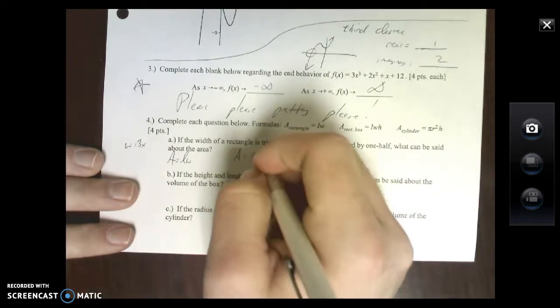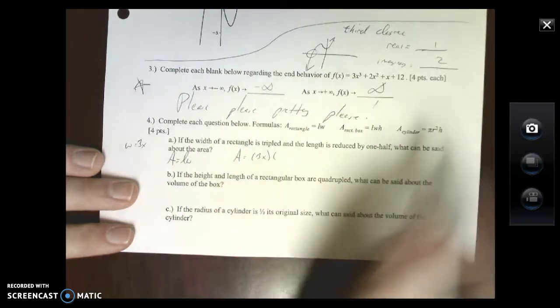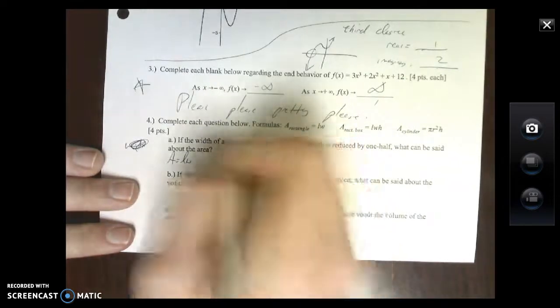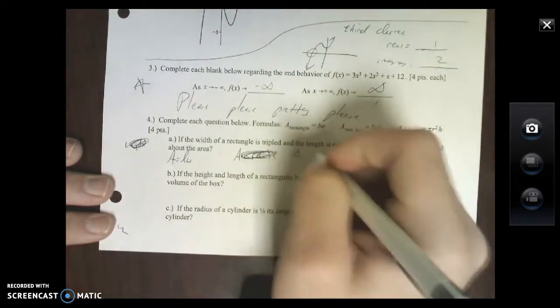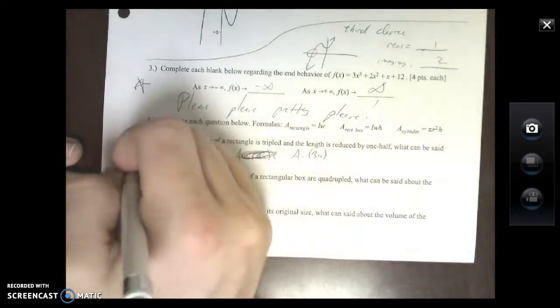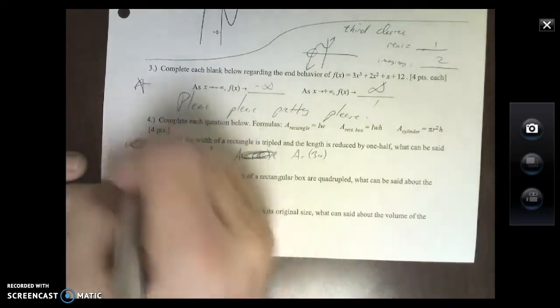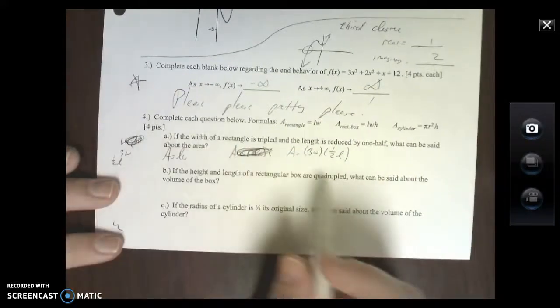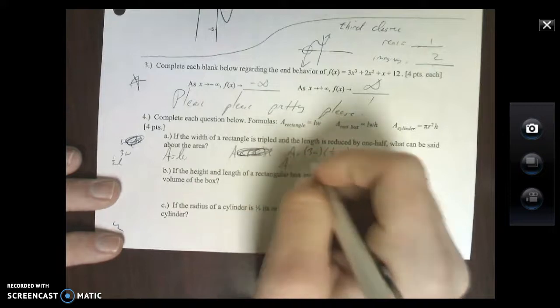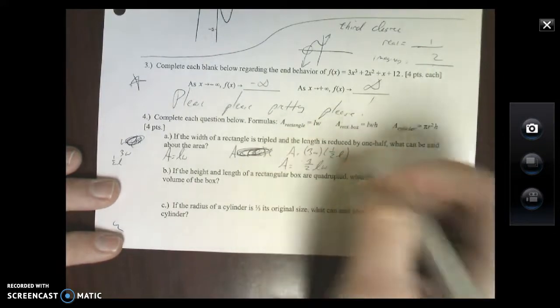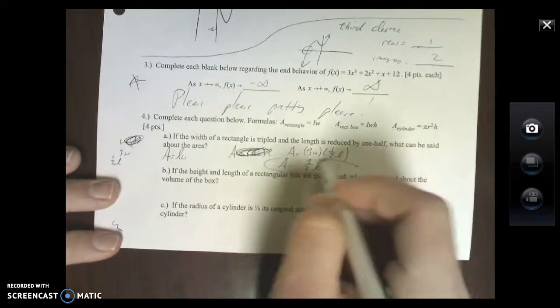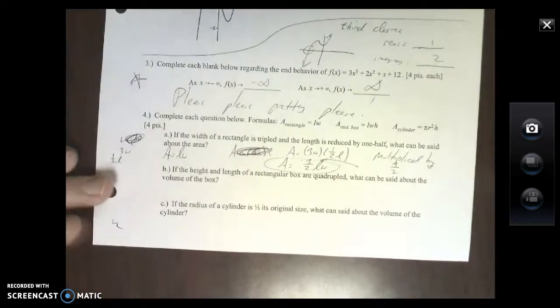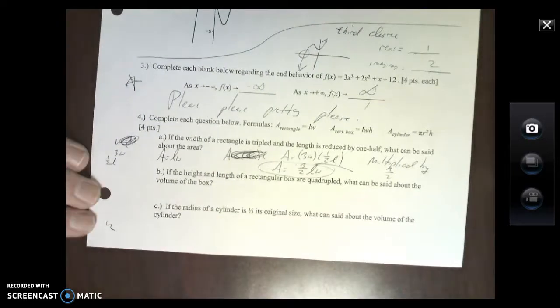And then it says the length is reduced by one half. So area equals 3W because my width is tripled - it's just 3W, 3 times the width. And my length is one half, so my length is 1/2 L. So all I'm going to do is multiply these together. What's three times one half? Three halves. Length times width. So that's literally your answer: your area is going to be multiplied by 3/2. It's the number out front. Really simple, it's not going to get more difficult than that.